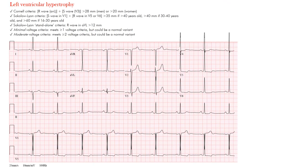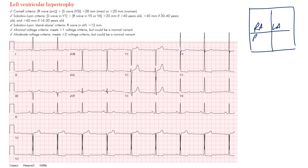Left ventricular hypertrophy means thickening of the left ventricular wall. If we draw the heart — right atrium, left atrium, right ventricle, left ventricle — we're saying there's thickening of that left ventricular wall. The cause may be from many reasons: often with age, from hypertension with uncontrolled elevated blood pressures, or from aortic stenosis, since the aorta comes off the left ventricle and a stenotic aortic valve can result in back pressure.